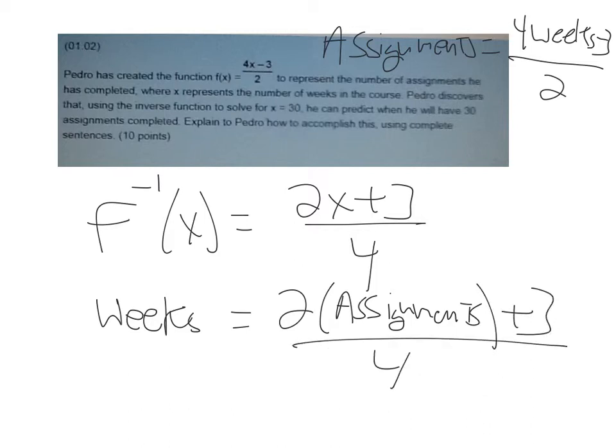So what we're trying to do, we want to have how many weeks it takes to do 30 assignments. So what I can do is I can just replace the assignments with 30. 2 times 30 is 60 plus 3 is 63. 63 divided by 4 is what? 15 to 16 weeks it will take.